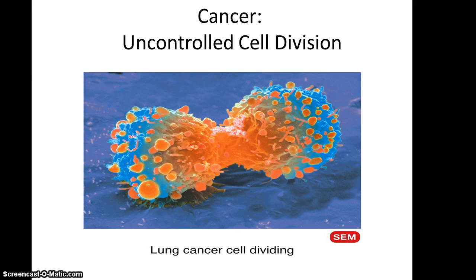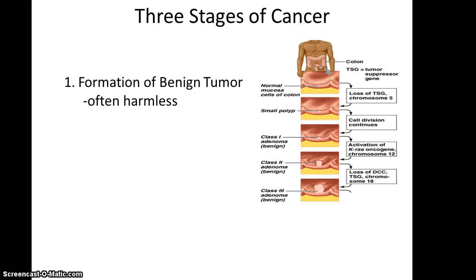The reason why mitosis is so important, besides just regular cell division, is that when it loses control, you can get cancer. Cancer is basically caused by the accumulation of mutations in the DNA.